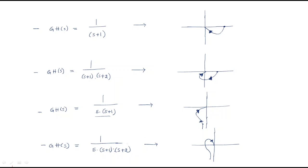If you add one more pole, the ending direction will be the next step after minus 90 degrees. So if there is one finite pole, it looks like this. If a finite zero is added, it looks like this. Adding another pole again shifts the plot further. So we will draw some conclusions here.